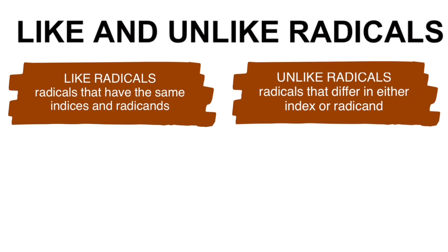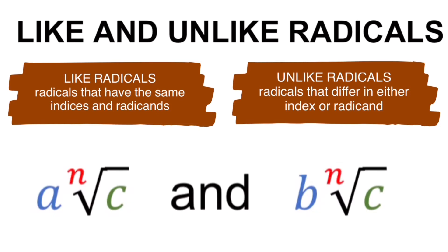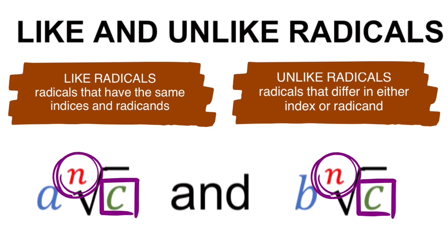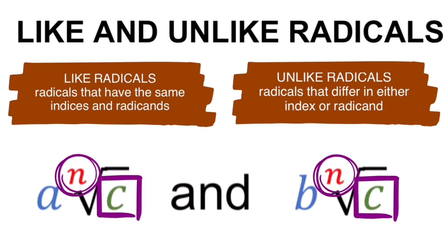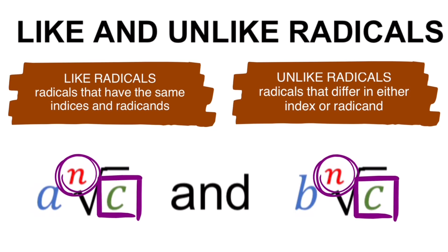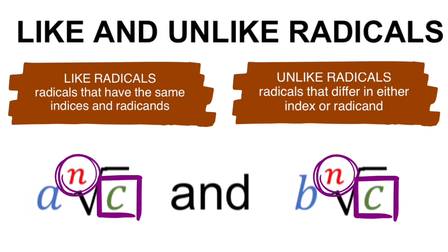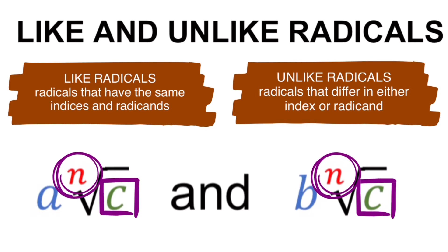So let's take these general radical expressions. These two radical expressions that we have here are like radicals. The only two parts of the radicals that we look at to determine if they are like or unlike are the indices and the radicands. In this case, both indices are the same and both radicands are the same. It doesn't matter if the coefficients are not the same — as long as the indices and the radicands are the same, we say that the radicals are like radicals.